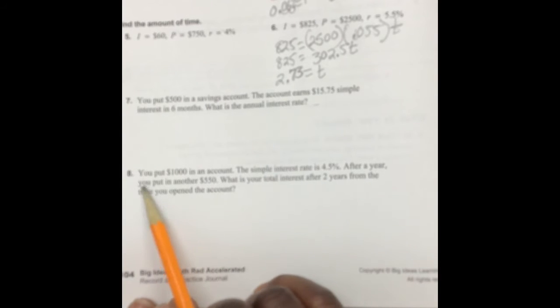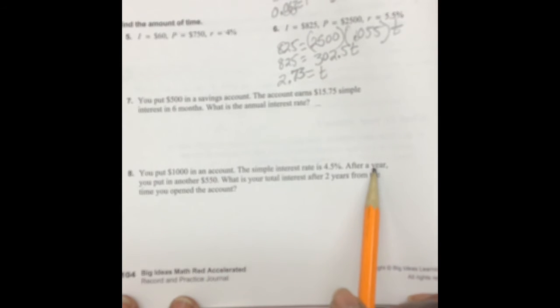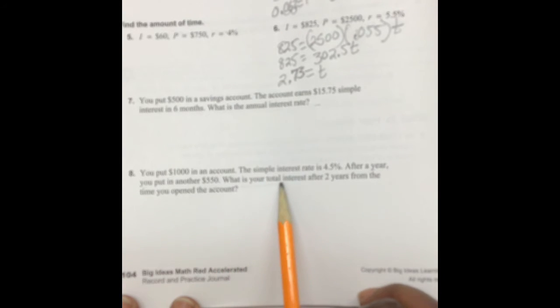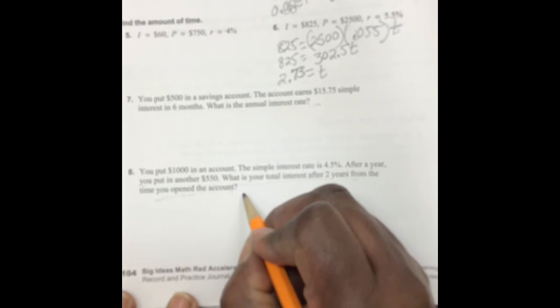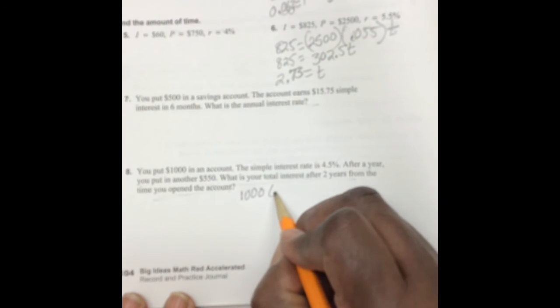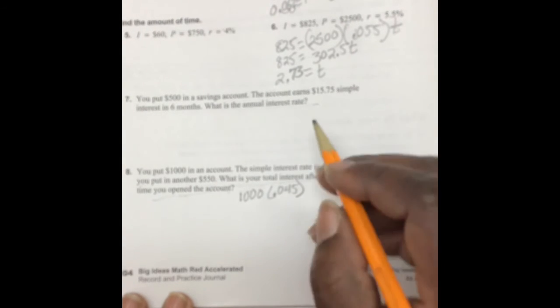Number 8 says you put $1,000 in an account. The simple interest is 4.5%. After a year, you put in another $550. What is your total interest after two years from the time you open the account?